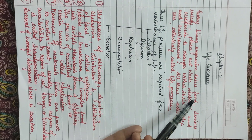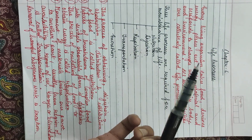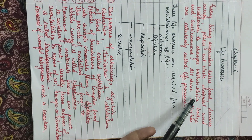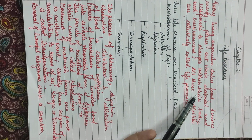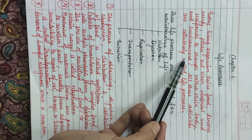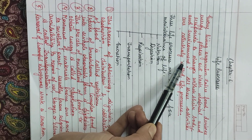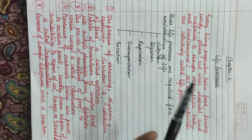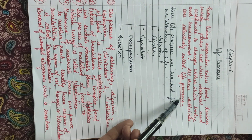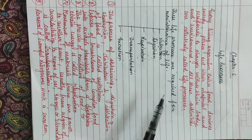Every living organism takes food from its environment to obtain energy. The food that cannot be utilized is removed from the body as waste. If there is a change in the body, for example a disease, or a change in the environment such as danger, the organism can respond to it. All these activities are called life processes, and these life processes are necessary for the survival of every living organism.